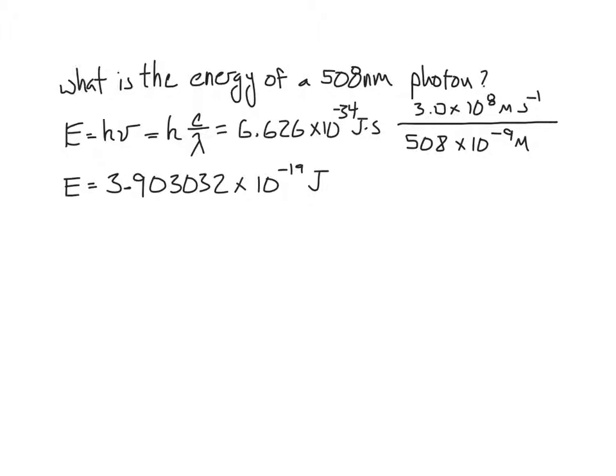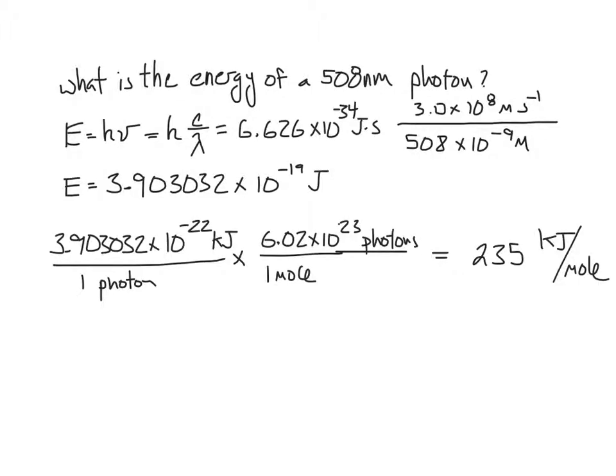Notice that this is the energy per photon. Often in chemistry we like to think about the energy per mole of photons. So let's convert this to the energy per mole of these photons, and let's also convert it to energy in units of kilojoules per mole. Performing that calculation, we see that the energy per mole is 235 kilojoules per mole of those photons that have a wavelength of 508 nanometers.